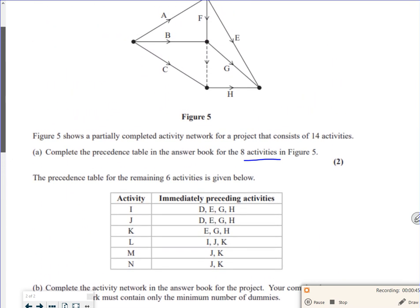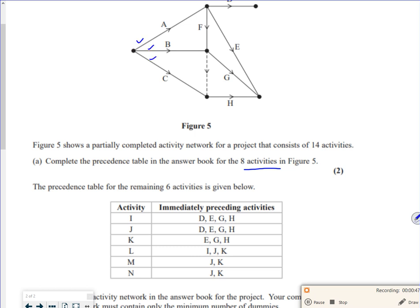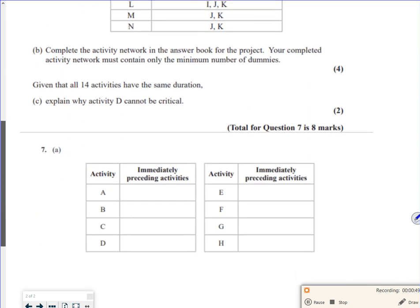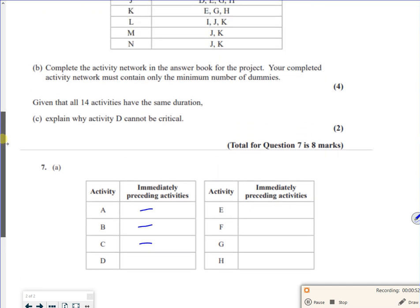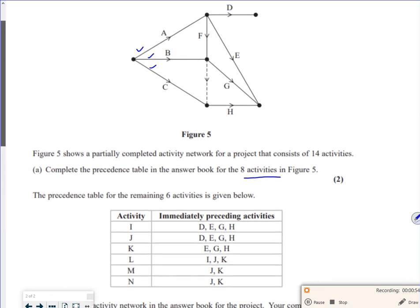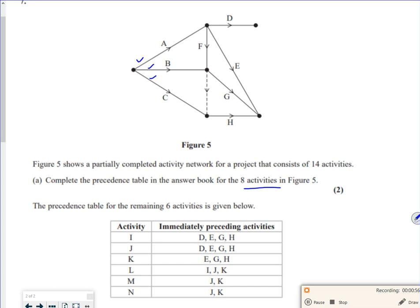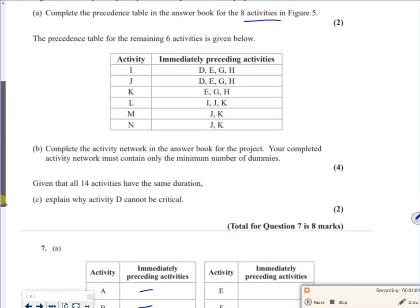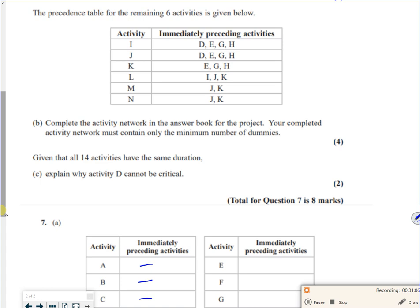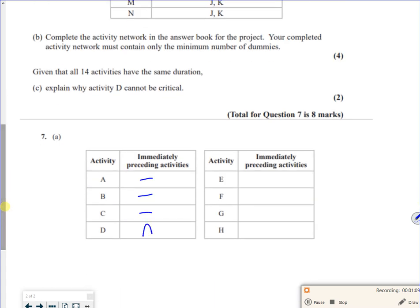So if you look, A, B and C are the starting points, they have nothing before them. So A, B and C, got that. Let's go back up there. D depends just on A. So that's okay.